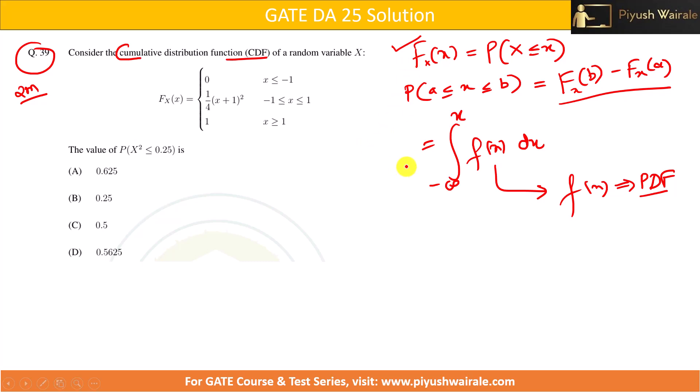Now based on this, can we solve this particular question? The CDF is given to us: it equals zero for the value of x less than or equal to minus one, and equals one when x is greater than or equal to one. When the value of x is between minus one to one, this function we have. We need to find out the value of probability X² less than or equal to 0.5.